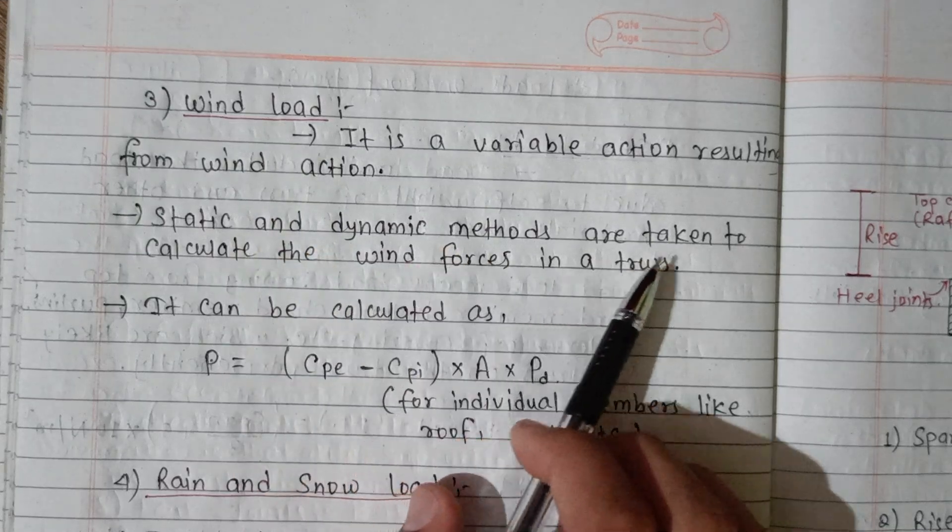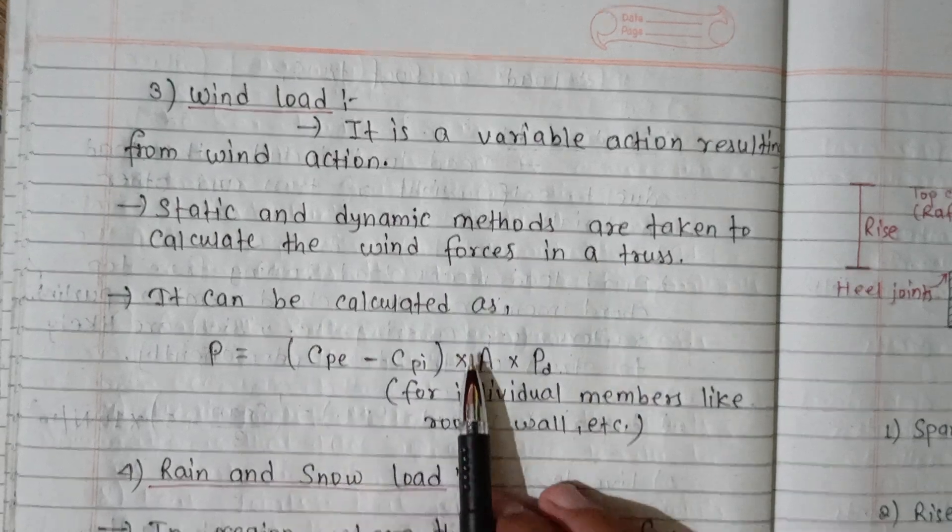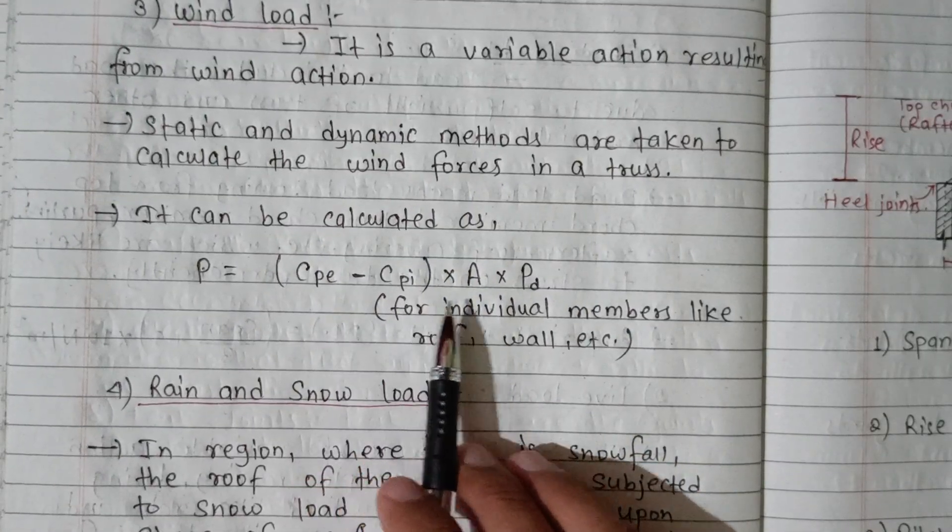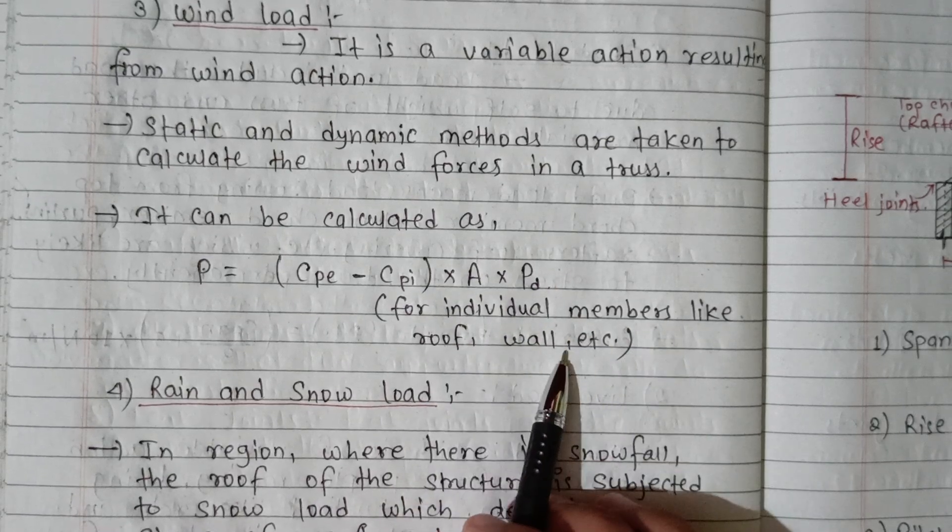Wind load: it is a variable action resulting from wind action. Static and dynamic methods are taken to calculate the wind force in a truss. It can be calculated as P = (Cp - Cpi) × A × Pd for individual members like roof and wall.